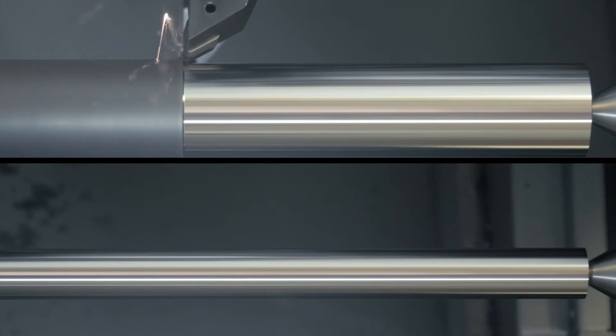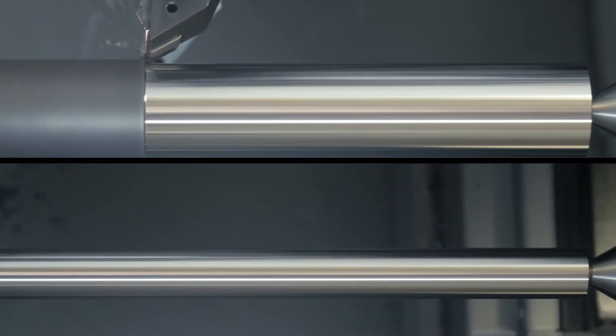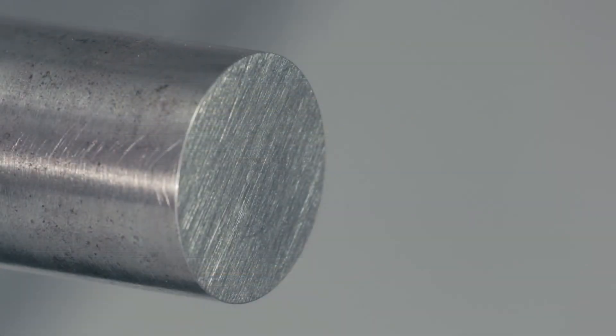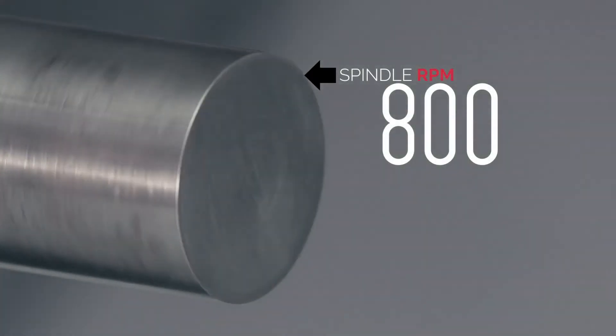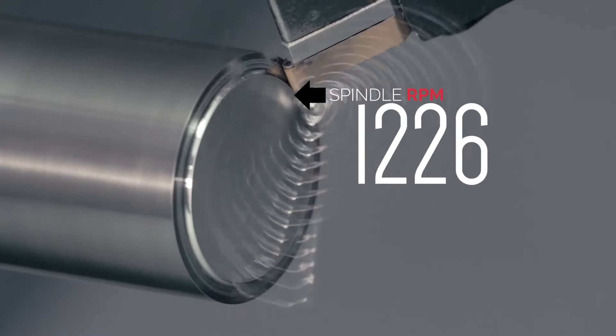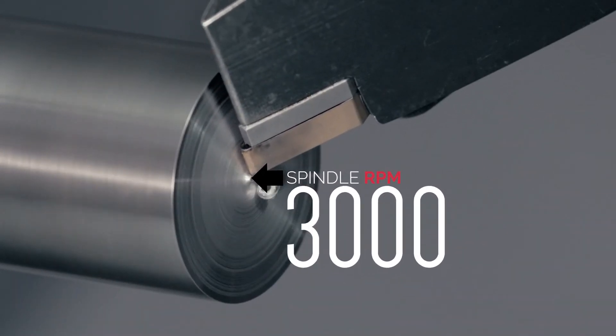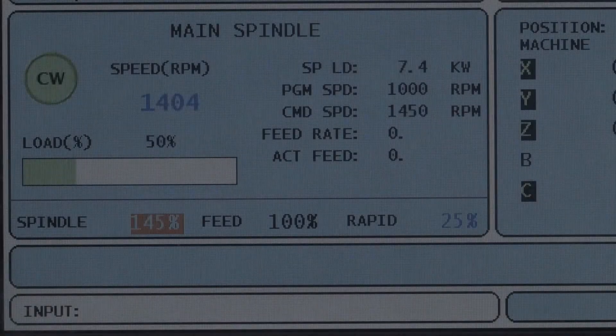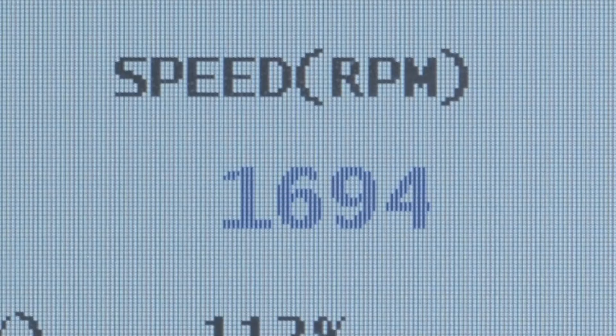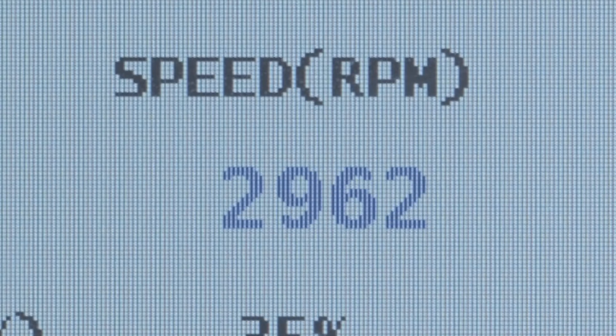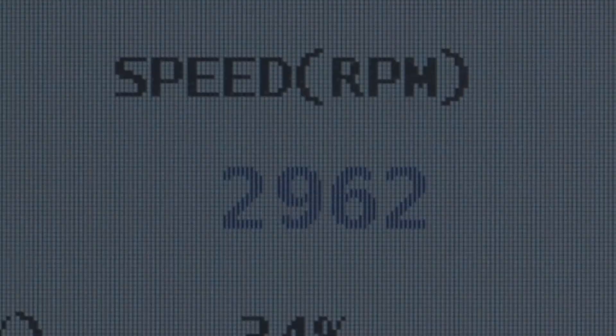It adjusts spindle speed on the fly to maintain a constant surface speed at the tip of the tool. When you're facing a part, for example, spindle speed increases constantly as the cut moves towards the center. So it's easy to see how spindle speeds can get away from you pretty quickly. So it would be good to have control over the high speeds that G96 can generate. And that's where G50 comes in.